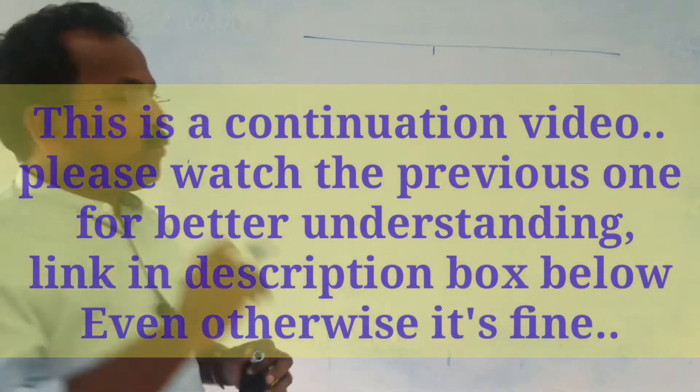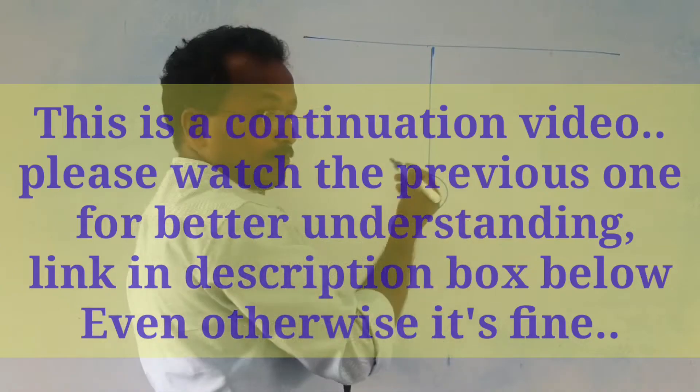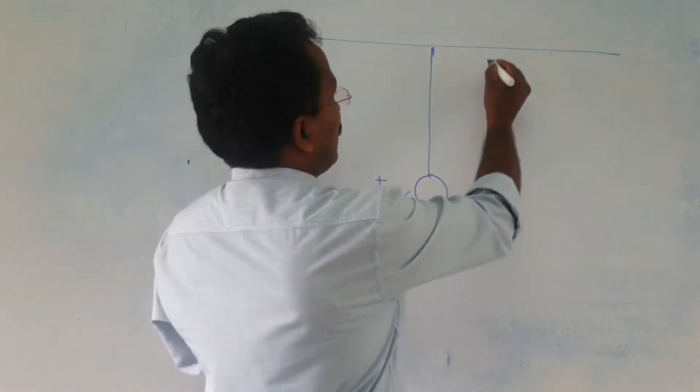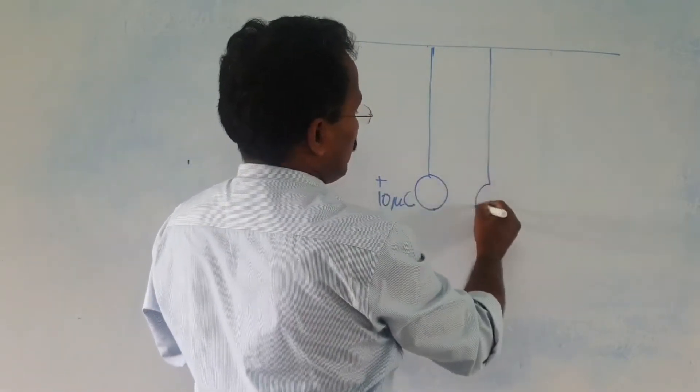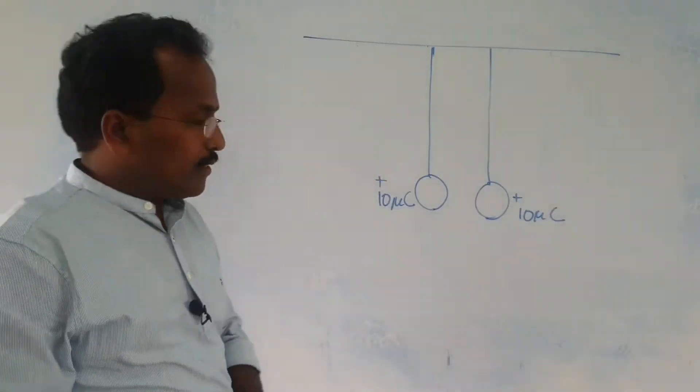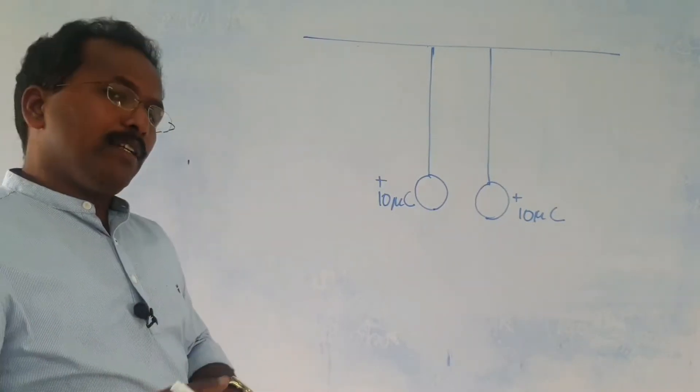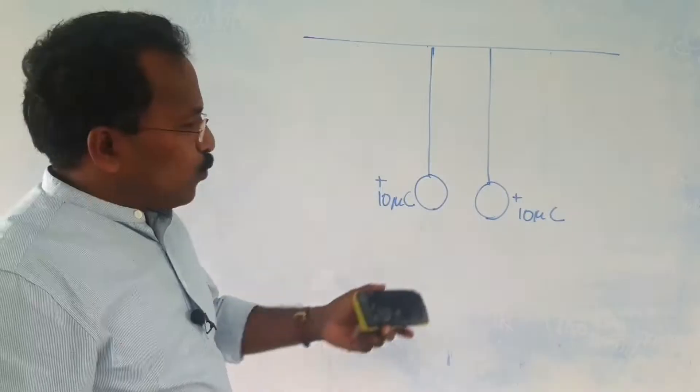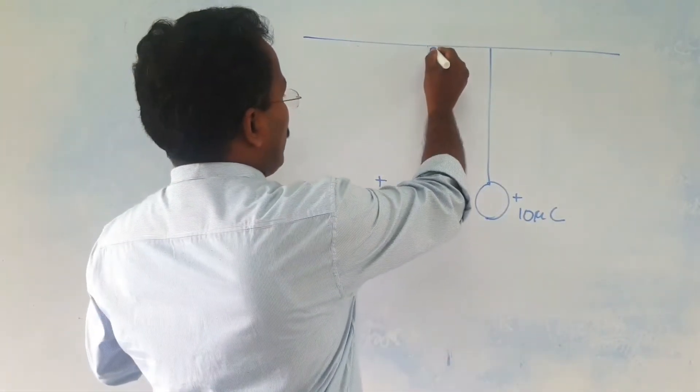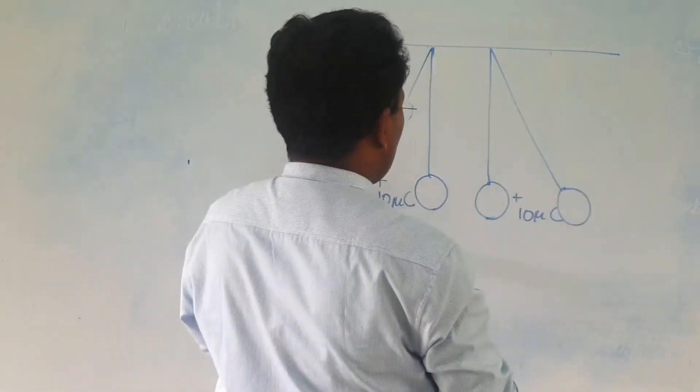In the next example also, we have two bolts, one bolt is given some plus 10 microcoulomb charge and another bolt which is also given plus 10 microcoulomb charge. Remember when you are giving positive charge, you are not giving anything positive to that, you are picking electrons. What happens now? They will repel apart. So this bolt will be standing like this and this bolt will be standing like this.